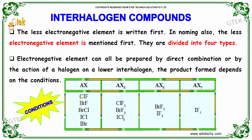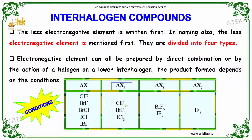They are divided into four types. CIF: Cl is considered the less electronegative element. BrF: Br is considered the less electronegative element. These can also be prepared by direct combination or by the action of a halogen on a lower interhalogen. AX type includes one Cl and one F, or one Br and one Cl. AX3 includes ClF3 and BrF3. AX5 includes IF5. AX7 is also a type.